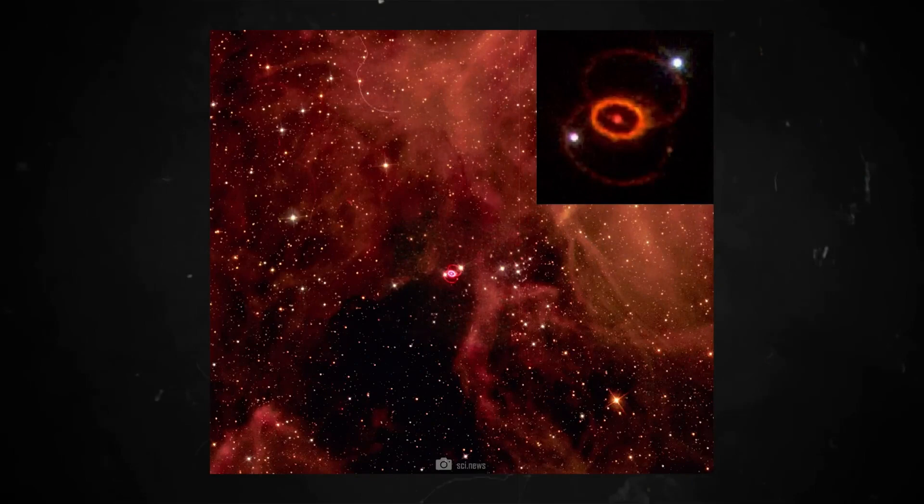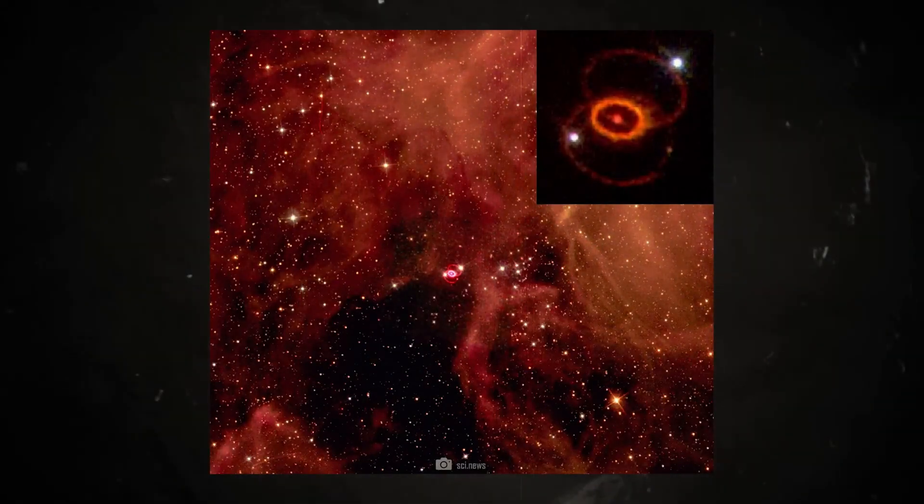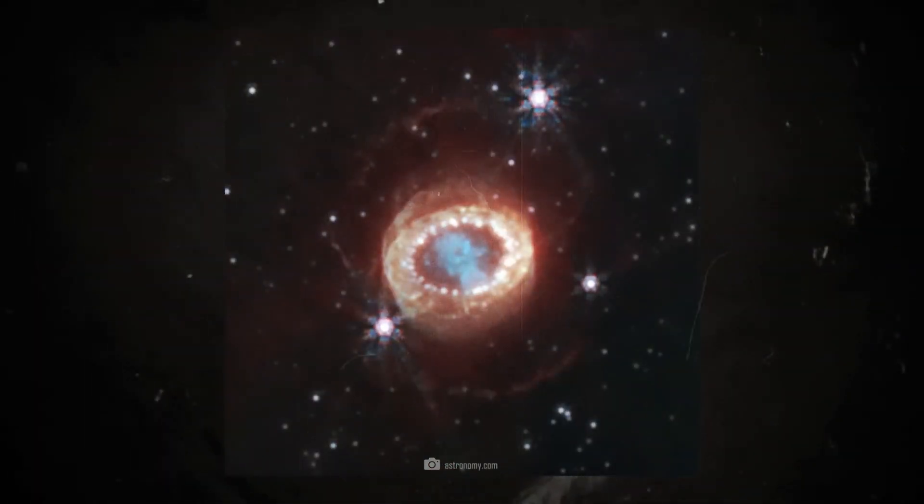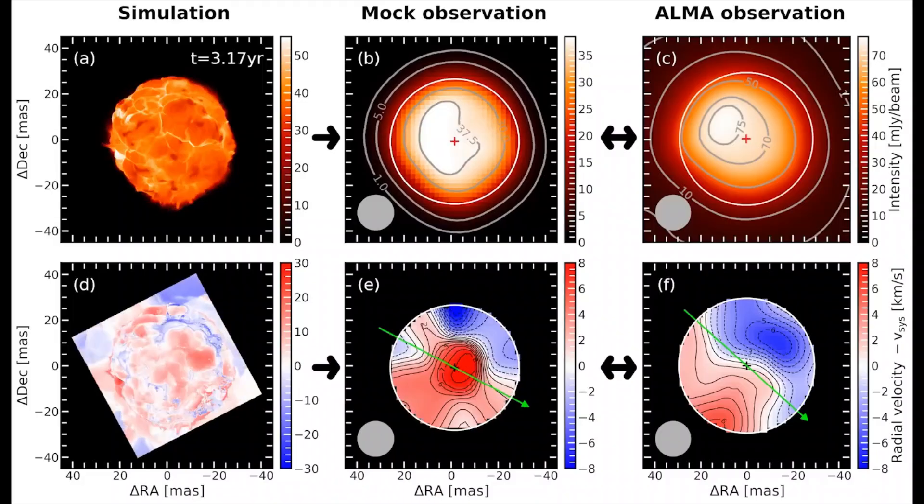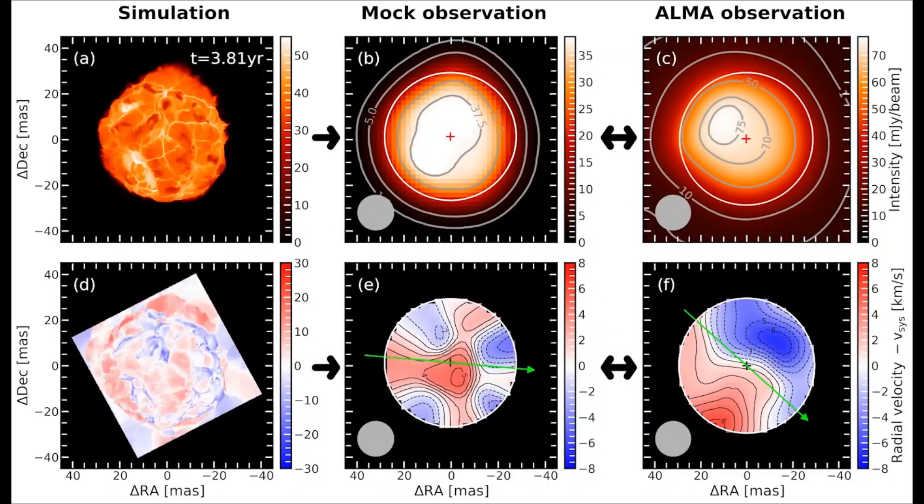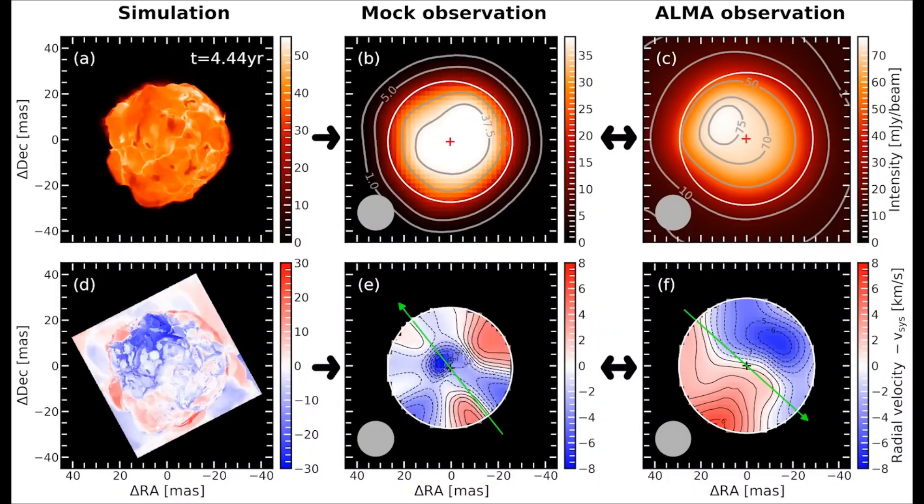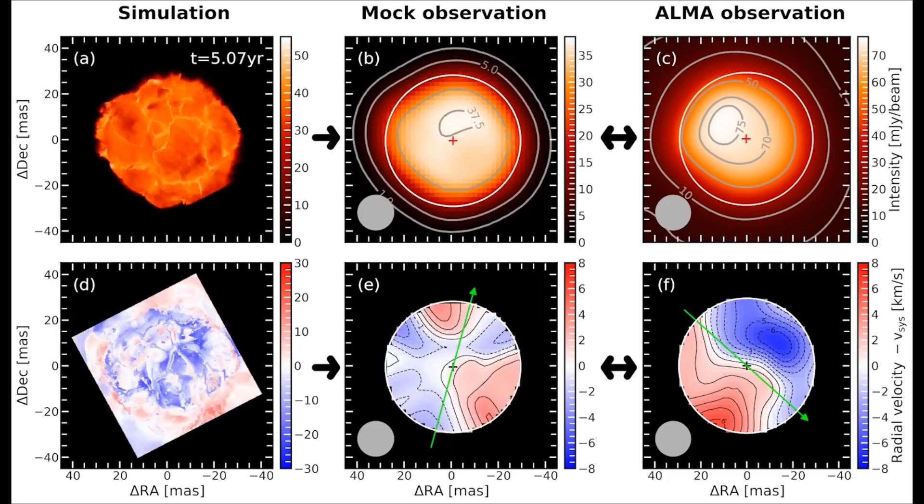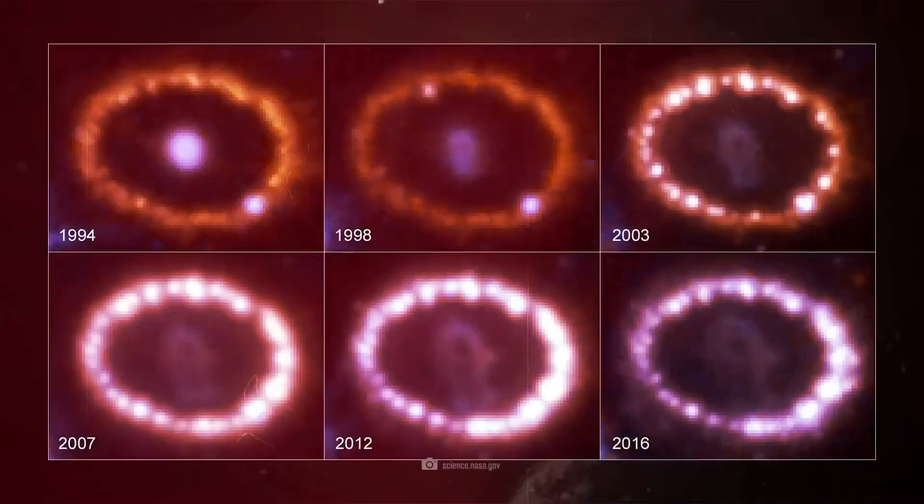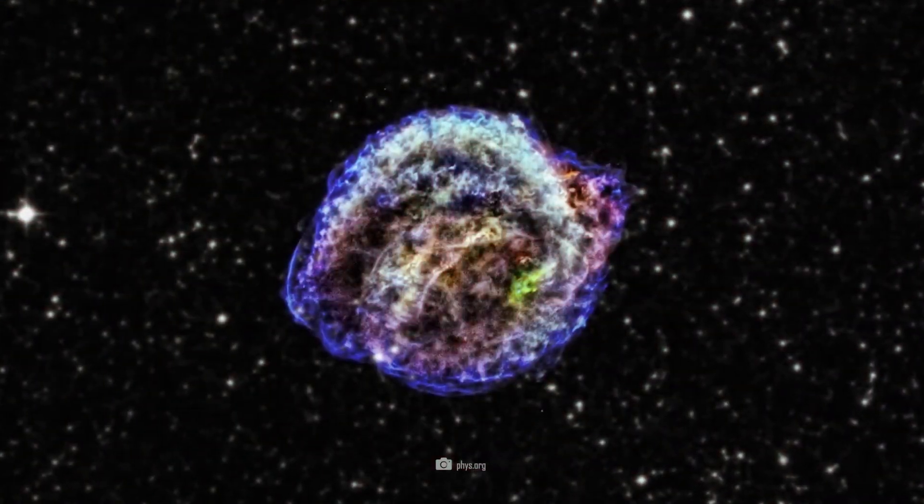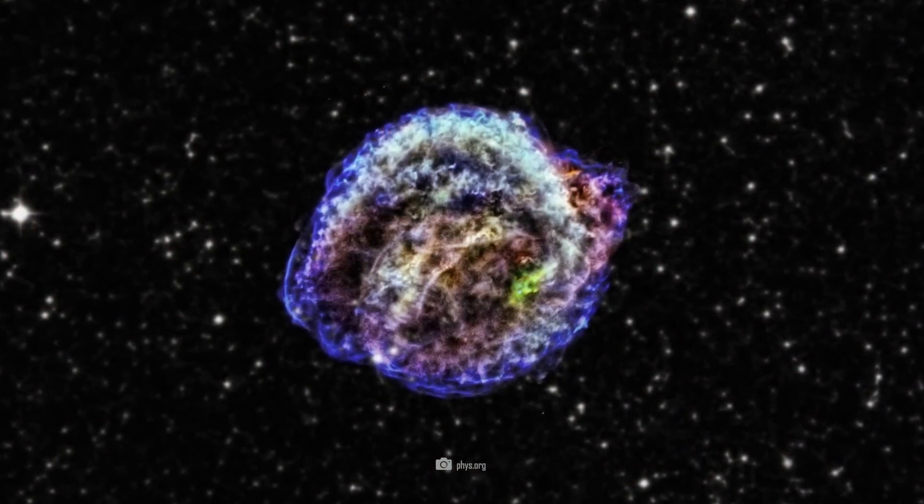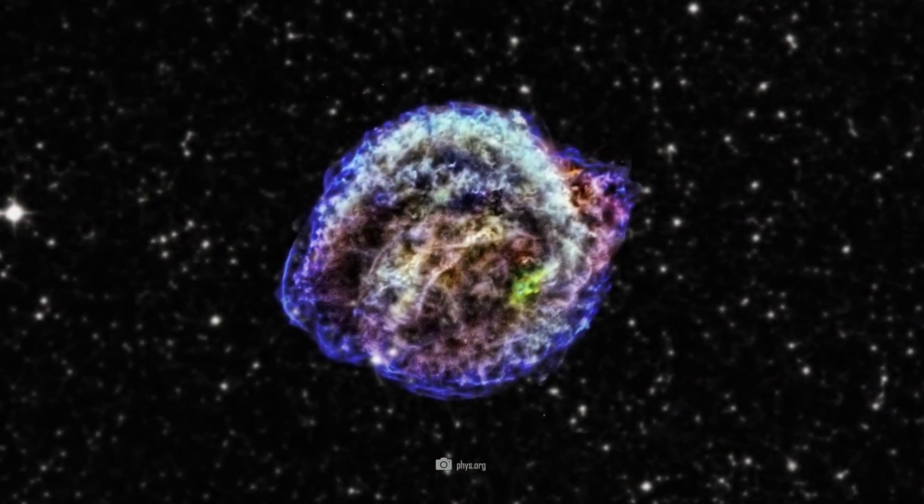The last supernova visible and documented from Earth was Supernova 1987A. In the Large Magellanic Cloud, a small neighboring galaxy of the Milky Way. This supernova was discovered on February 24, 1987, and provided astronomers with a valuable opportunity to study in detail the physical processes and aftermath of a supernova explosion.